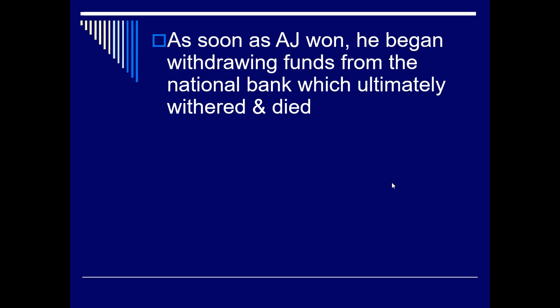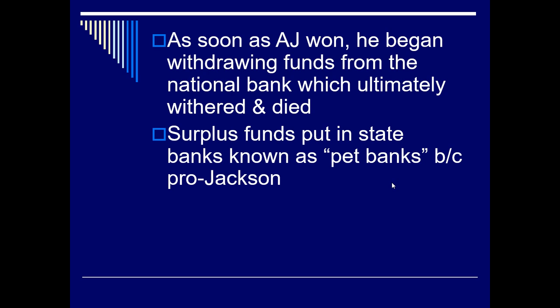As soon as Jackson wins, he begins withdrawing funds from the national bank. He doesn't trust it — he thinks industrialists have too much power, that foreign investors have too much control over American financial interests, and that states should run their own banks instead of a national system. He starts to kill the national bank of the United States. Surplus funds are put into what they call 'pet banks' — pro-Jackson state banks. He fires multiple secretaries of the treasury until Roger Taney agrees to do this, and with no money in the national banks, it essentially dies.